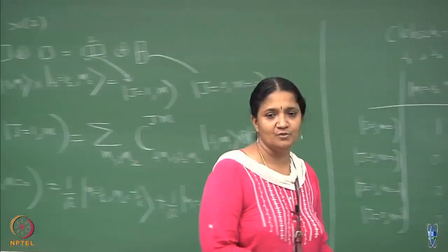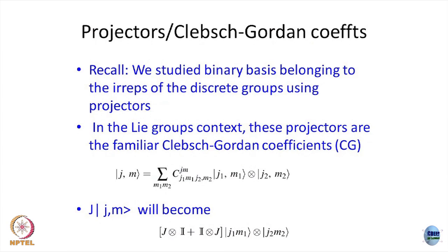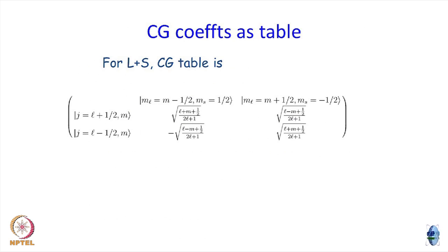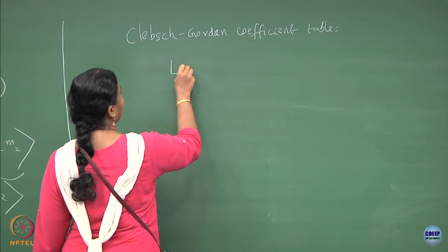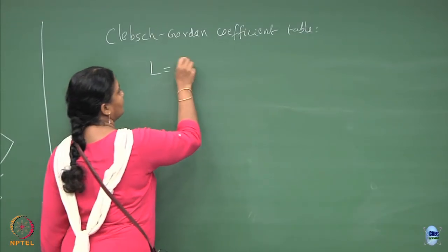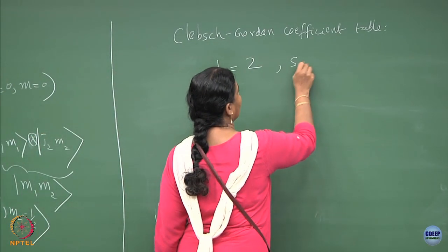Now let us get to the problem we want to do. For completeness I have again put this on the slide — the formal expression and the procedure for determining the Clebsch-Gordan, which is not pertinent to this course, but you can appreciate the table from it. Suppose I give you spin-orbit coupling — a system with orbital angular momentum L and spin angular momentum S, where S is always spin-½. You can combine those two: L plus S.